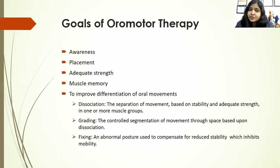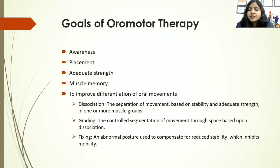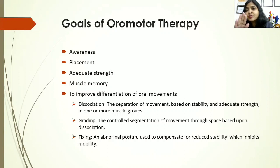How do we manage these problems? We manage it with oromotor therapy or oral placement therapy. The goals of this therapy start with awareness — what is in the mouth, which structures are present, where are the lips, tongue, jaw, and palate, how to bring teeth together to chew. Then comes placement — teaching the child where to place his tongue and touch the palate to produce the target sound. Then adequate strength — the child might know where to place but there is no strength in the jaw to keep it stable or no strength in the tongue to elevate it. We need to increase the strength of the muscles of the mouth — the articulators — for speech and feeding.